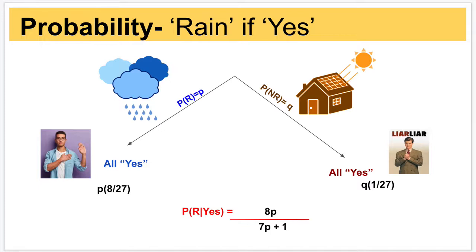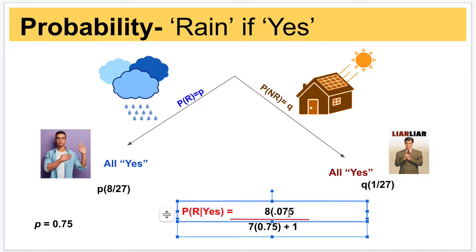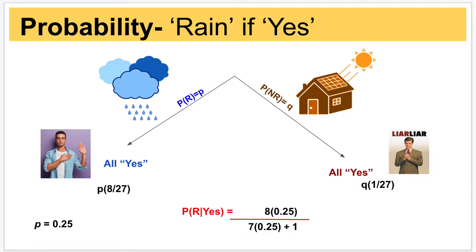The probability of raining given that all friends said yes is 8 times the probability of raining divided by 7 times the probability of rain plus 1. If we knew the probability of raining, we can simply substitute that into the equation. For example, with a prior probability of raining of 0.25, substituting into the formula gives a result of 0.72. So there is a 0.72 probability that it is raining if they all say yes.